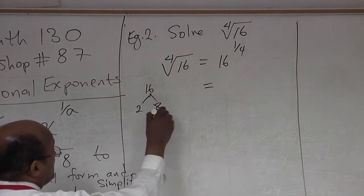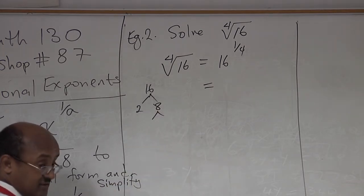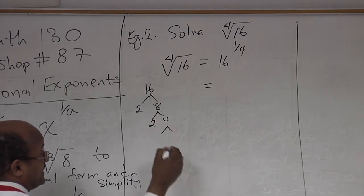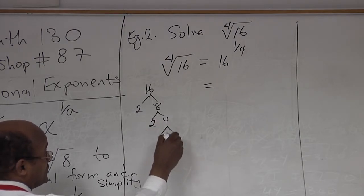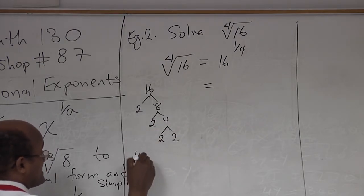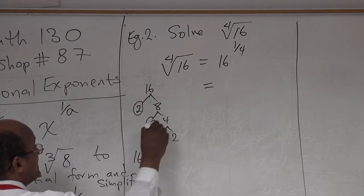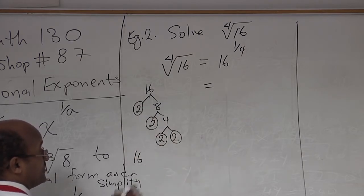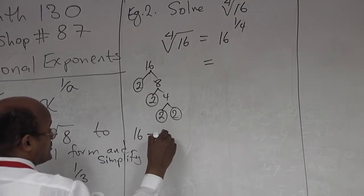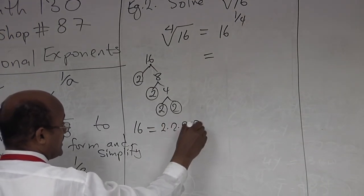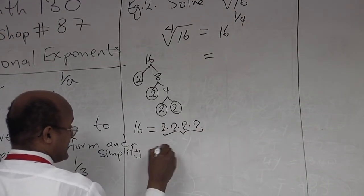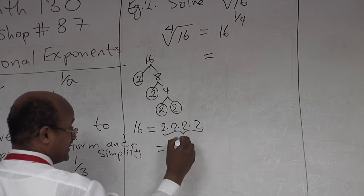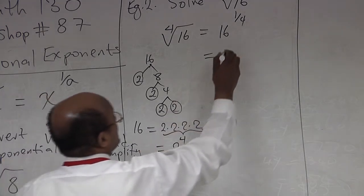Continuing the factor tree: 8 means 2 times 4, and 4 means 2 times 2. So 16 means you pick the last numbers from your branches, which is 2 times 2 times 2 times 2. That is 2 to the power of 4, because you have four 2s.